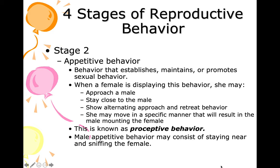Stage two is appetitive behavior — behavior that establishes, maintains, or promotes sexual behavior. When a female is displaying this behavior, she may approach a male, stay close, show alternating approach and retreat behavior, or move in a specific manner that results in the male mounting her. This is known as proceptive behavior. Male appetitive behavior may consist of staying near and sniffing the female.